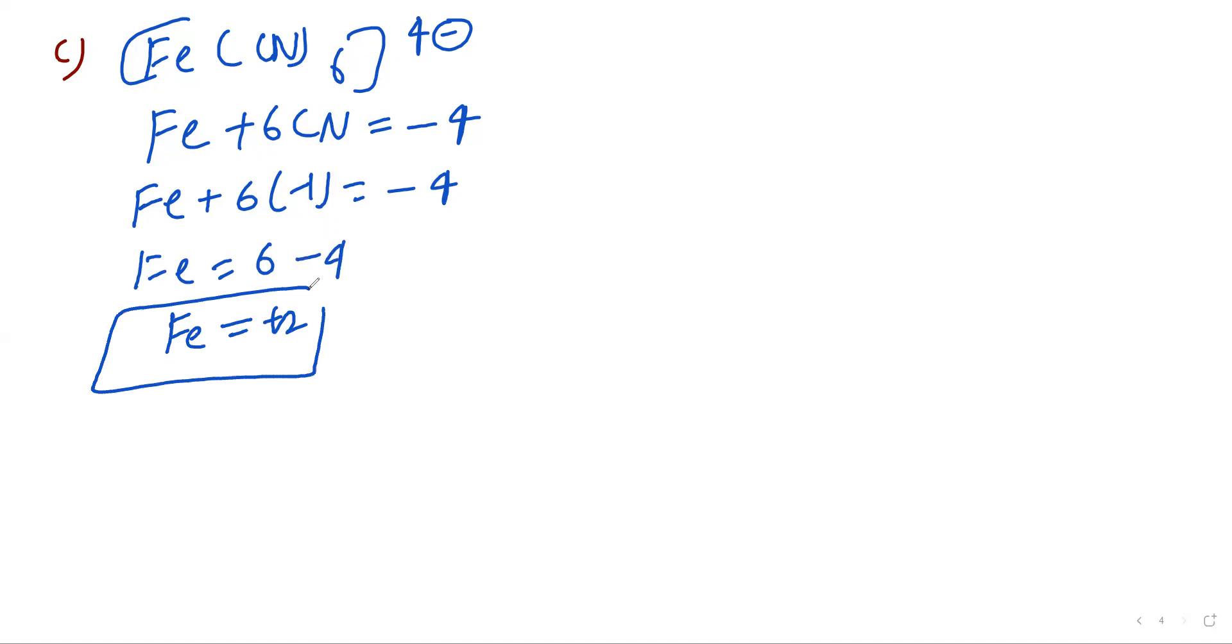Third, it is Fe(CN)6 equal to minus 4. Its oxidation state is 2 plus. We know that is zero for CN. Strong field ligand, so it will do the pairing first.